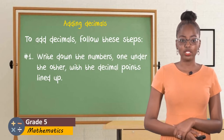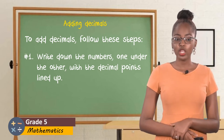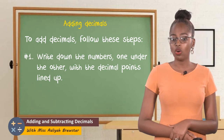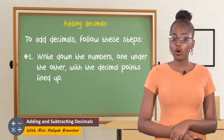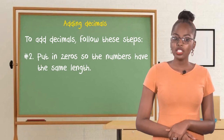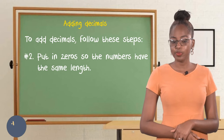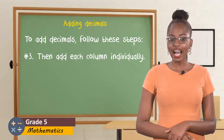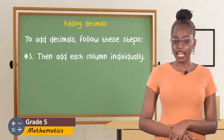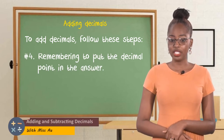Adding decimals. To add decimals, follow these steps. Number one: write down the numbers one under the other with the decimal points lined up. Number two: put in zeros so the numbers have the same length. Number three: add each column individually. And lastly: remember to put the decimal point in the answer.